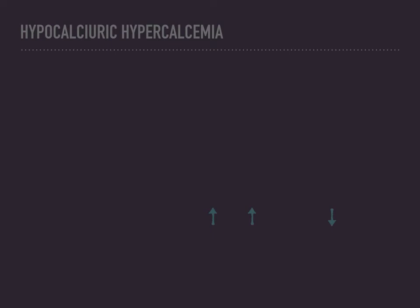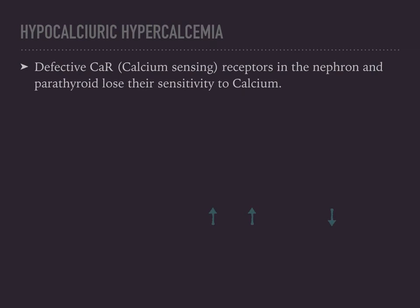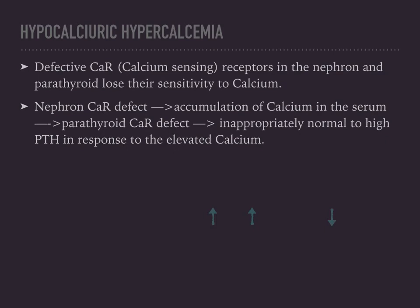Hypocalciuric hypercalcemia is a familial disorder that is very high yield. It is caused by defective calcium sensing receptors in the nephron and parathyroid that have lost their sensitivity to calcium. In the nephron, since the calcium sensing receptors are not working properly, there is an accumulation of calcium in the serum. The parathyroid's response to increased serum calcium is also impaired, resulting in an inappropriately normal to high parathyroid hormone even with elevated calcium.